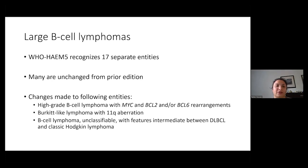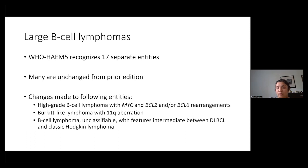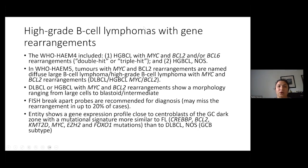Moving to large B-cell lymphomas: the WHO recognizes 17 separate large B-cell lymphoma entities. I'm only going to touch on a few — many have been unchanged from the prior edition. Changes were made to the following entities from the fourth edition: high-grade B-cell lymphoma with MYC and BCL2 and/or BCL6; Burkitt-like lymphoma with 11q aberration is also a new entity; and B-cell lymphoma unclassifiable with features intermediate between DLBCL and classic Hodgkin lymphoma is a new entity.